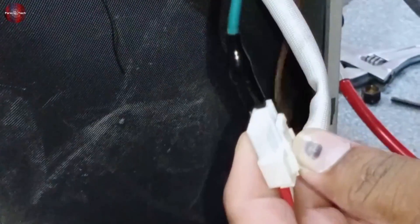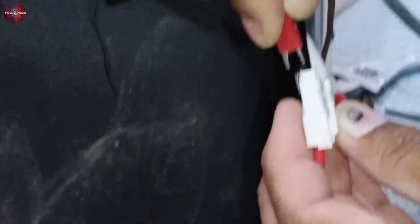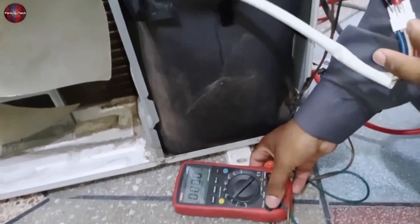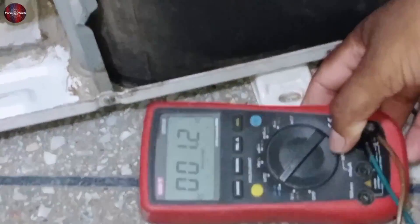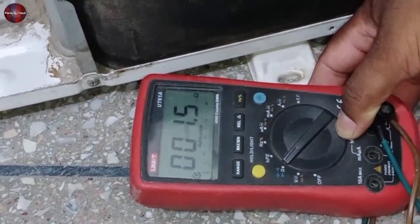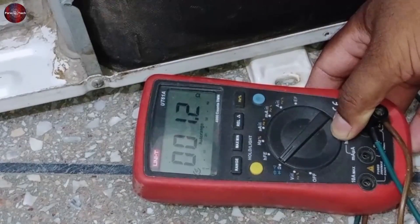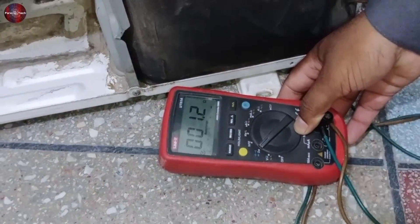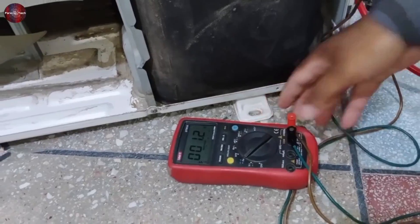Attach the first probe to any terminal of the compressor and the second probe to the next terminal. And see, the multimeter has started showing us the compressor's reading. We are getting the value of 1.2 ohms on the multimeter with these two terminals. Note down this value.